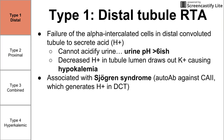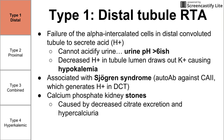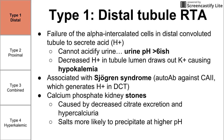Type 1 distal tubular RTA is associated with Sjögren syndrome, which involves the production of autoantibodies against carbonic anhydrase 2. Carbonic anhydrase 2 is an enzyme responsible for generating hydrogen ions in the distal convoluted tubule, so it makes sense that an autoantibody against this enzyme would prevent the alpha intercalated cells from producing hydrogen ions. Type 1 is also related to calcium phosphate kidney stones, formed by decreased citrate excretion — citrate normally keeps calcium and phosphate from precipitating together — and hypercalciuria. Salts are also more likely to precipitate at higher pHs, and since urine pH is relatively high in type 1 RTA, that can occur here.